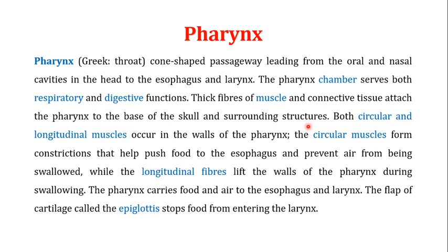In the pharynx there are both circular and longitudinal muscles, and the presence of these muscles helps in the performance of the pharynx's functions. The circular muscles form constrictions that help push the food into the esophagus and prevent air from being swallowed. The longitudinal muscles lift the wall of the pharynx during the process of swallowing. You will see how these muscles work in a moment.